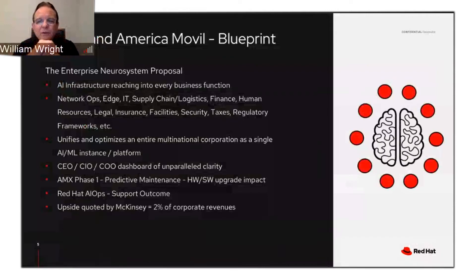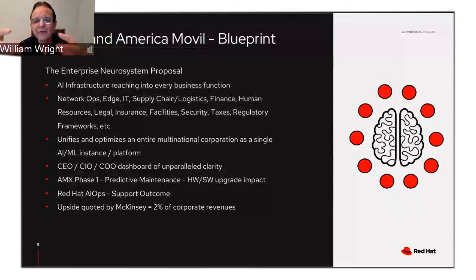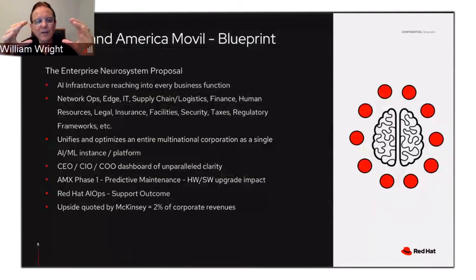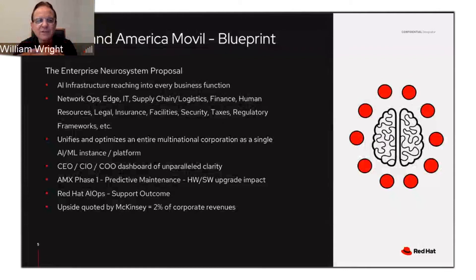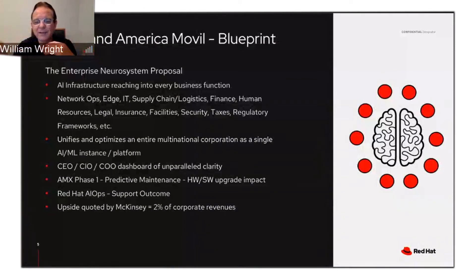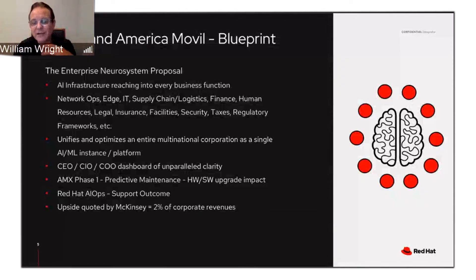The really fascinating project I'm working on right now is the Enterprise Neural System — it's how the totality of the AI and ML vision is being applied into telco today, and it's just getting started. It's all about AI infrastructure that reaches into every single business function in an enterprise and a mobile network — including network operations, edge operations, core IT, supply chains, logistics, finance, human resources, legal and contracts using NLP.